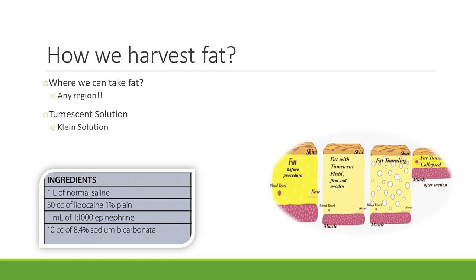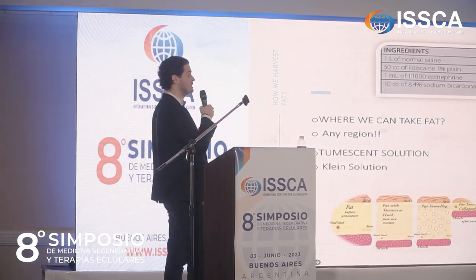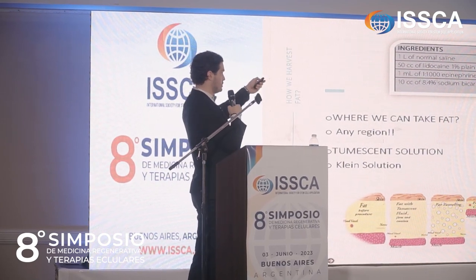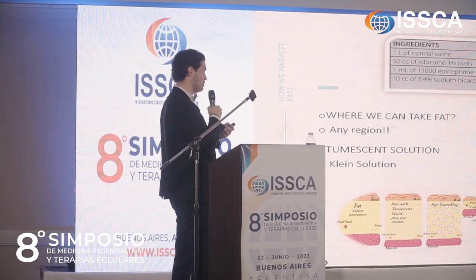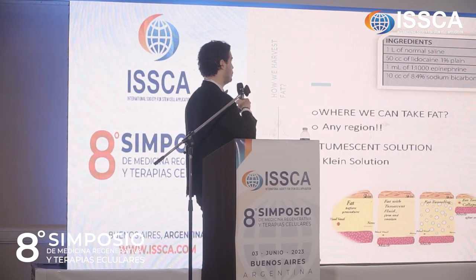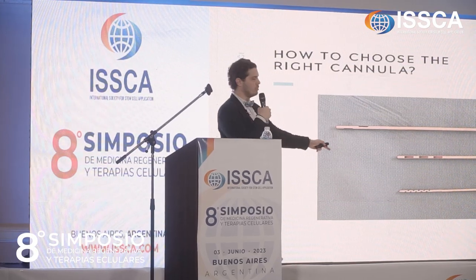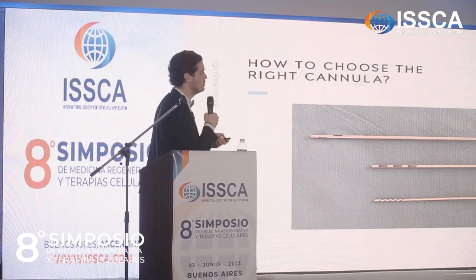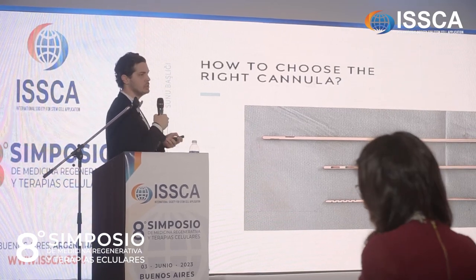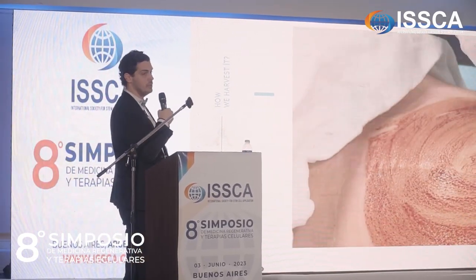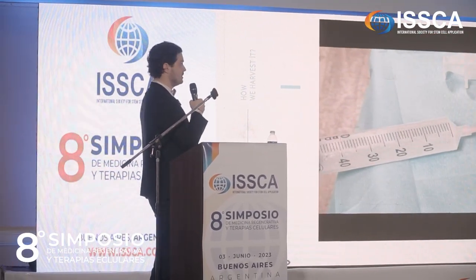We can take fat from any region. Here I am taking fat from a patient — first I inject a local anesthetic solution to prevent bleeding. This is the solution I normally use, called Klein solution. I sometimes modify it according to the patient's weight. These are the cannulas I use: the upper two are for taking fat, the lower one is for injecting tumescent fluid. They have different diameters — the lower one is much thinner.